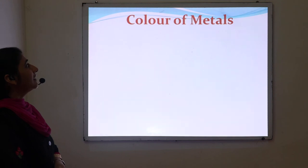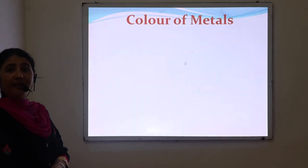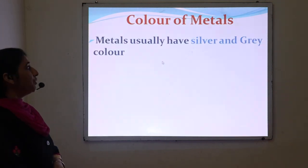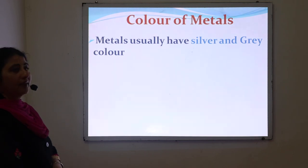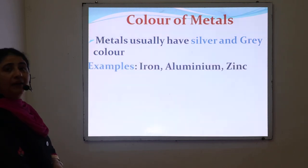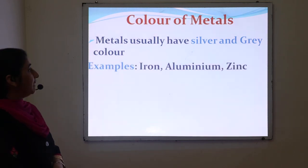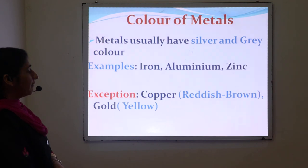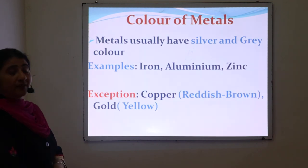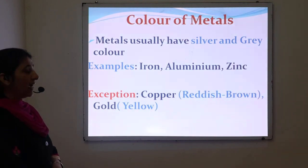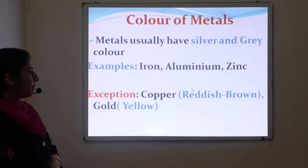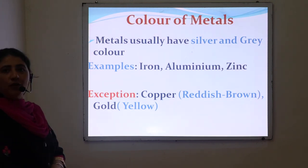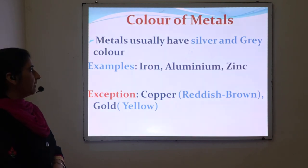Next is colors of metals. Metals are usually present in gray and silver color — for example, iron, aluminum, and zinc. But there are a few exceptions: copper has a reddish-brown color and gold is present in yellow color.